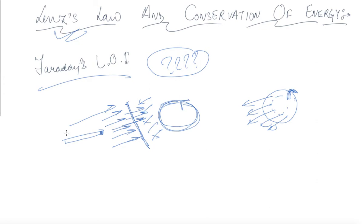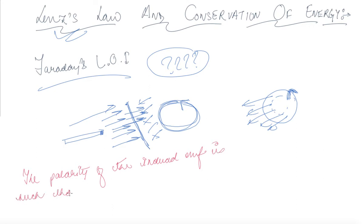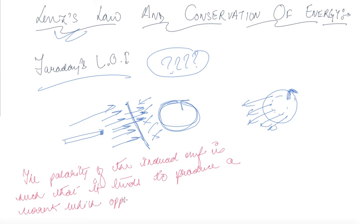The statement of Lenz's law goes like this: the polarity of the induced EMF is such that it tends to produce a current which opposes the change in magnetic flux.